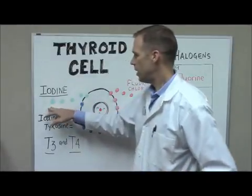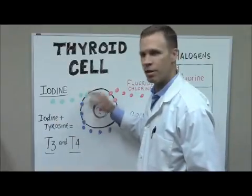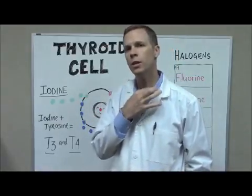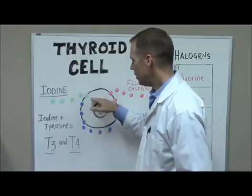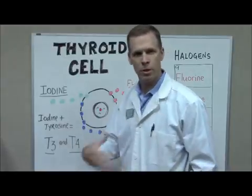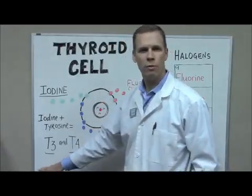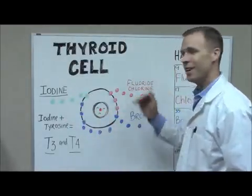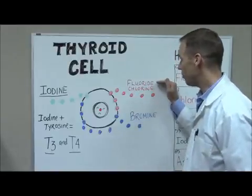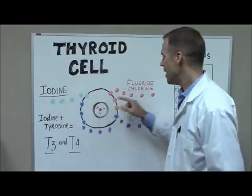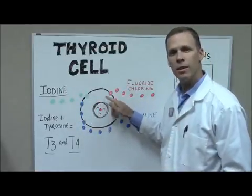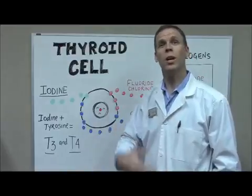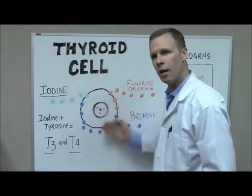Iodine is supposed to be the key to the lock on the receptor site of the cell. Iodine gets into the thyroid cell — that little butterfly-shaped gland right in your neck — and when it gets into the cell it combines with tyrosine through a bunch of chemical processes, and you get your thyroid hormone that we desperately need. But since fluoride, chlorine, and bromine look so similar to iodine, they actually fit the lock — they fit the receptor sites the same way iodine does. Now they don't turn the tumblers, they won't unlock it, but they fit the lock and they block all those receptor sites.